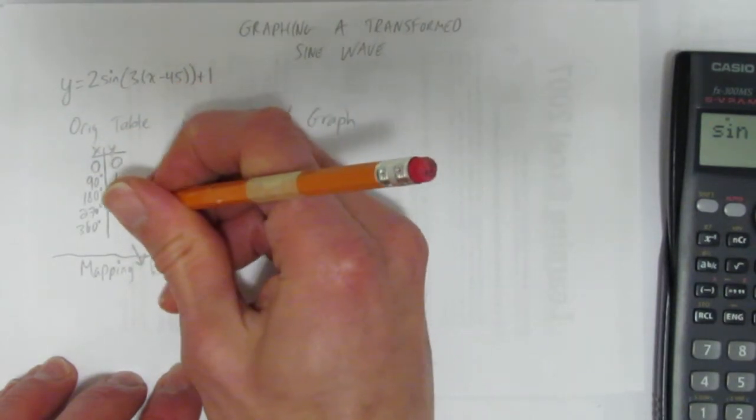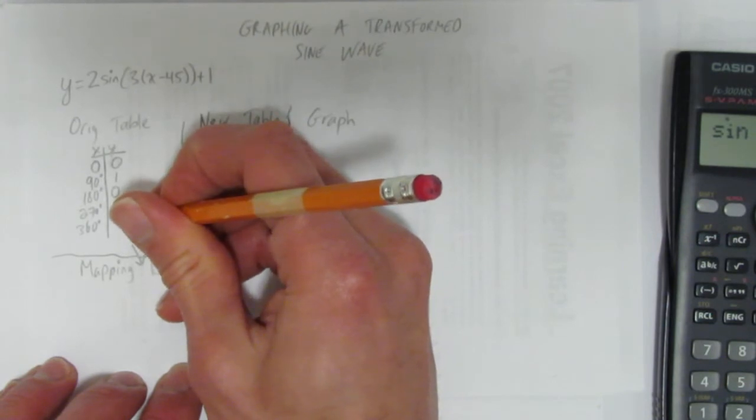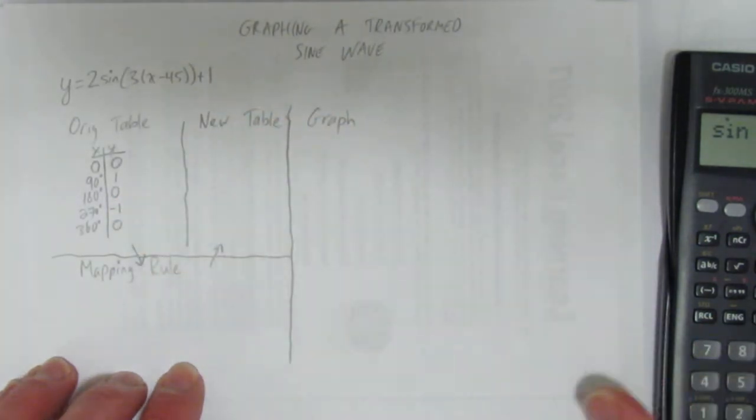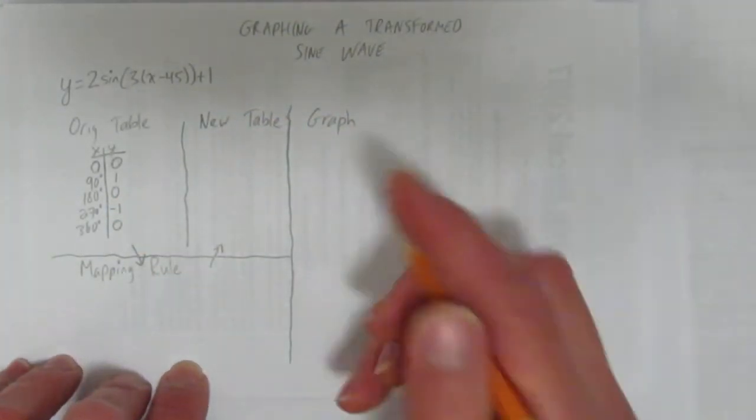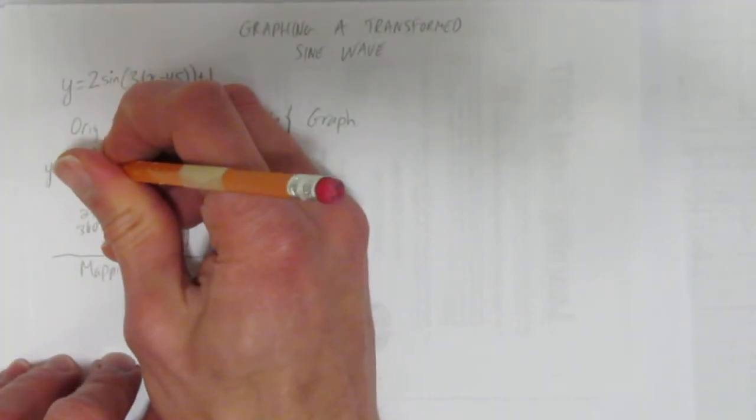It goes back to 0. 90 degrees later, it's down to negative 1. And then it's back to 0. So, that's your original equation of just the basic, if we were to write it out. This is just y equals sine x.